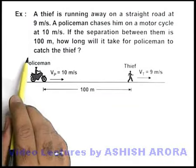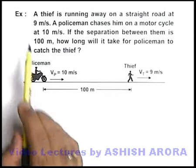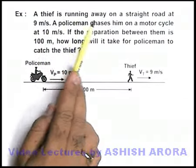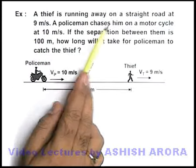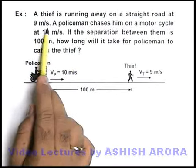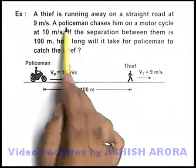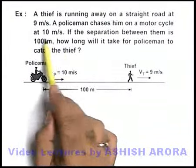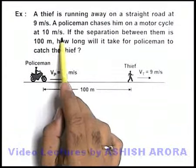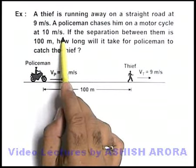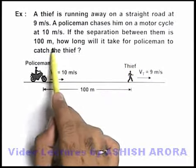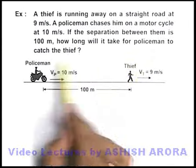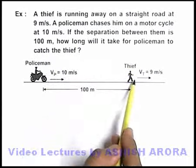Let's see an example. A thief is running away on a straight road at 9 meters per second, and a policeman chases him on a motorcycle at 10 meters per second. If the separation between them is 100 meters, how long will it take for the policeman to catch the thief?